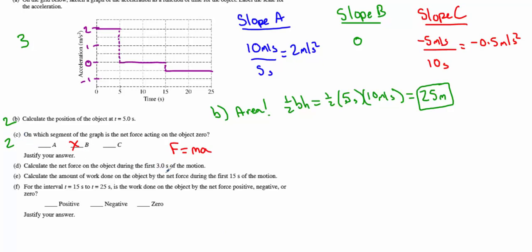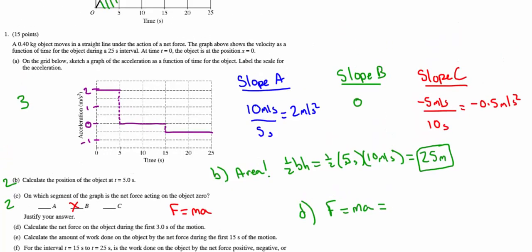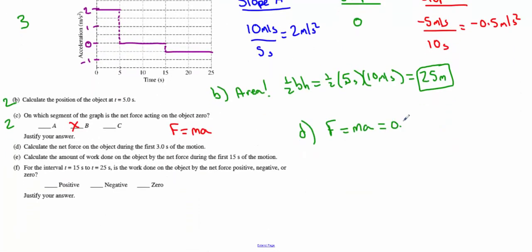Part D: We want to know the net force on the object during the first 3 seconds of the motion. If we continue to look at Newton's second law, F equals MA, as long as we know the acceleration at that time, we know the force. During the first 3 seconds, we have a 2 meter per second squared acceleration. It doesn't matter if it's during second 1, 2, 3, 4, or 5, the object is experiencing a net force of MA. Your net force equals 0.4 kilograms times 2 meters per second squared, so we find there's a net force of 0.8 newtons. D is worth a total of 2 points.